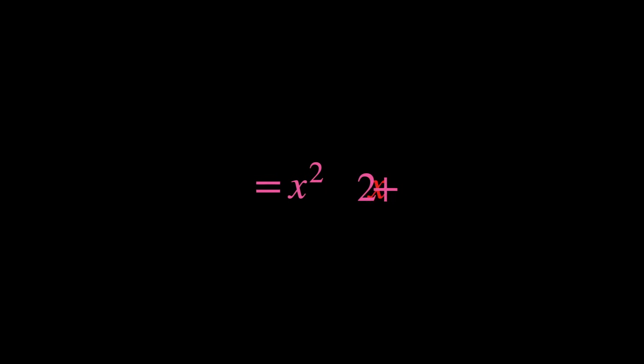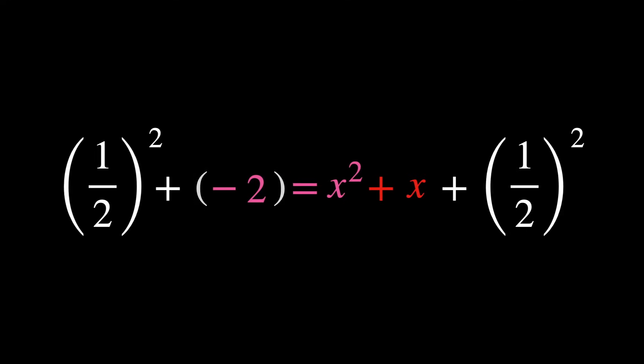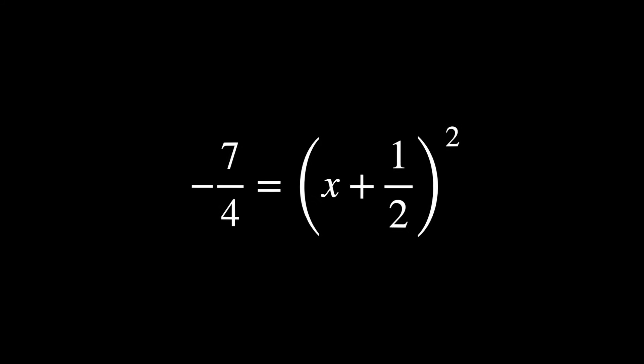Which would be rewritten as x² plus x equals -2. Add 1/4 to both sides. And then simplify it. The left-hand side represents the square of a number, which cannot be negative.